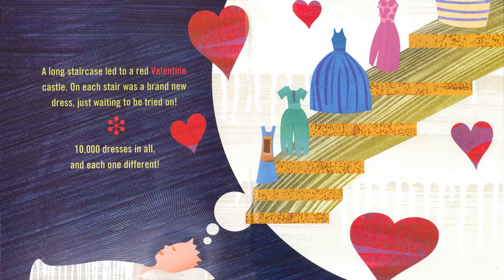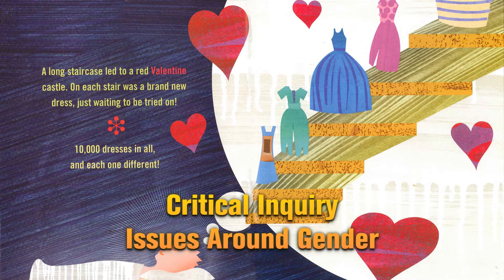This picture book is about a child named Bailey who is biologically a boy but identifies as a girl. Bailey struggles with the fact that her parents don't support her in this. This book is an excellent resource to use for the critical inquiry into issues around gender, such as gender roles, gender stereotypes, and recognizing dominant social constructions around gender.